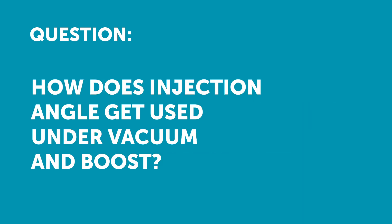Our next question comes from Thomas Zanes who's asked: can you talk about how injection angle can be used when under vacuum and when under boost? Injection angle defines simply whereabouts in the engine cycle the fuel is being delivered. This works for both port and direct injected engines, but it's much more sensitive on a direct injected engine, where the injection window is basically from the start of the intake cycle through to just before the ignition event occurs — a little bit less than half of the complete engine cycle.